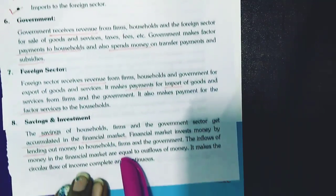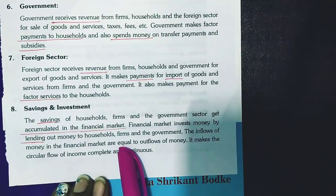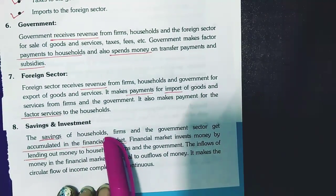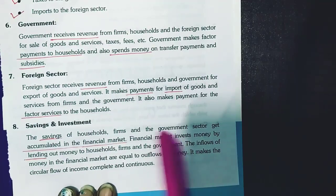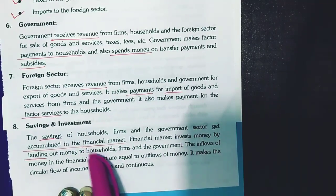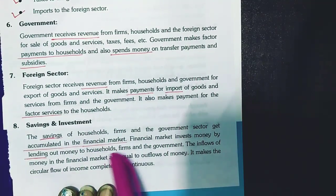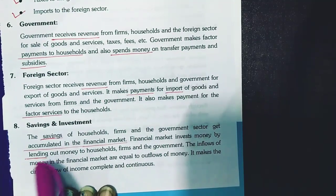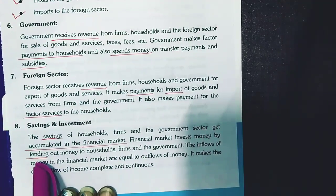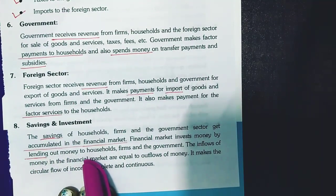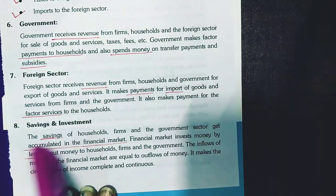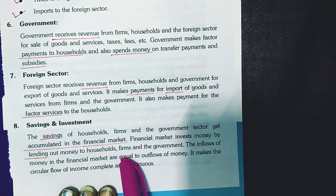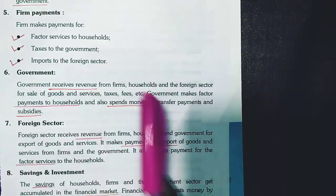The next point is savings and investment. The household, firm, and government sectors put their savings into the financial markets. The financial market then transfers those savings in the form of lending back to households, firms, and the government.